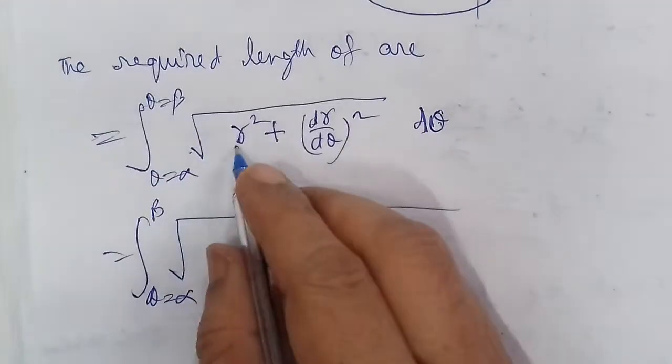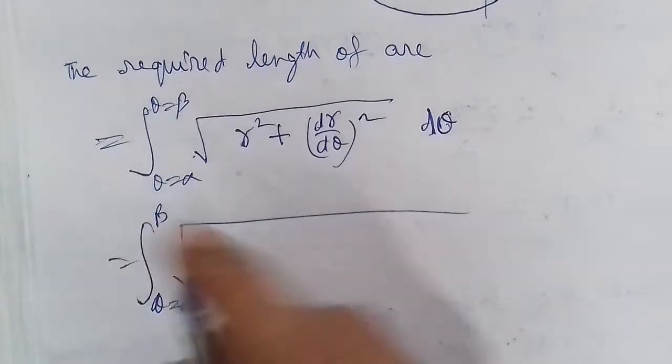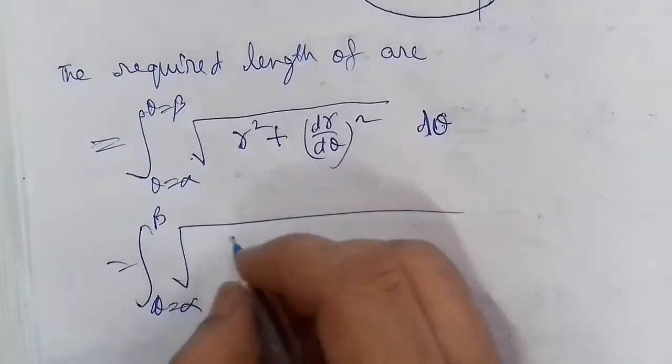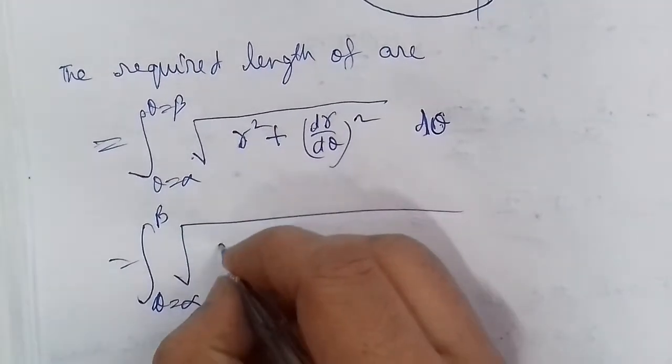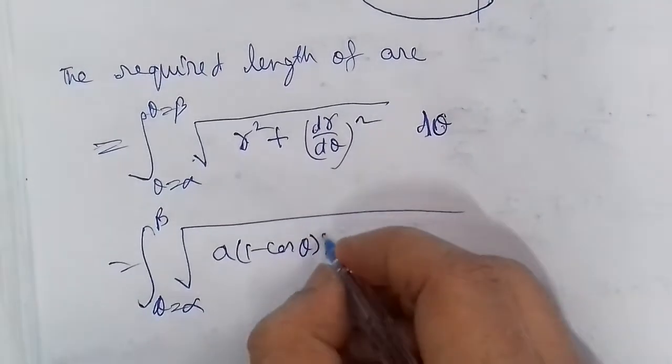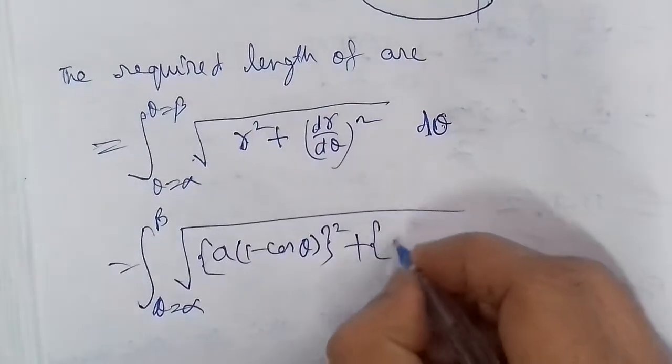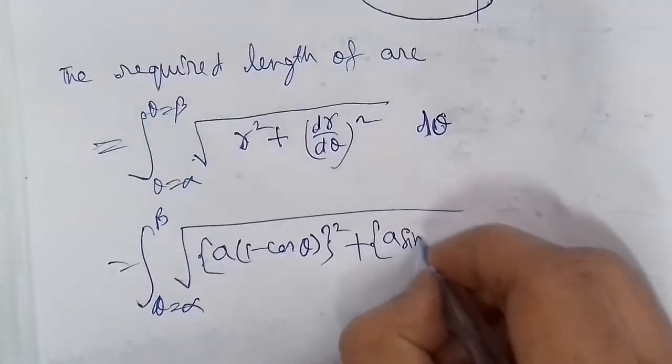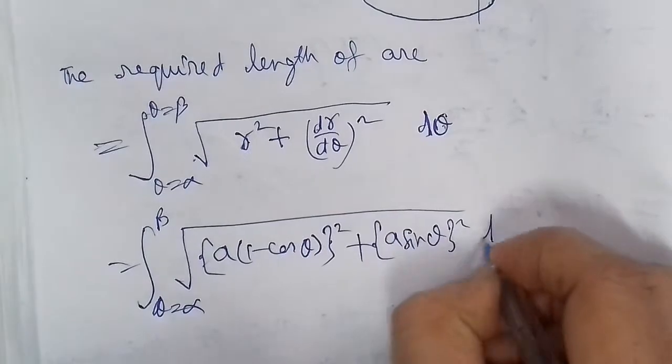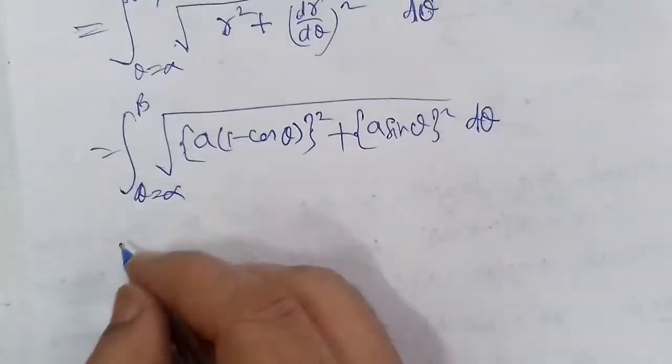We need the values of r² and dr/dθ. From equation number 1, we write down: r = a(1 - cos θ), which is the curve equation, and r² plus the derivative a sin θ, whole squared, times dθ. Now we solve this integral and obtain our result.